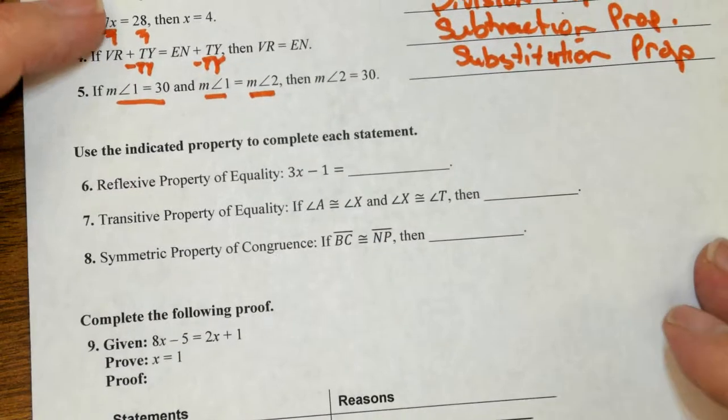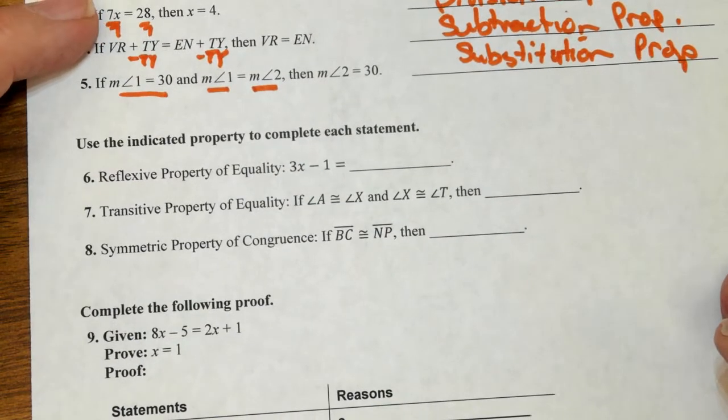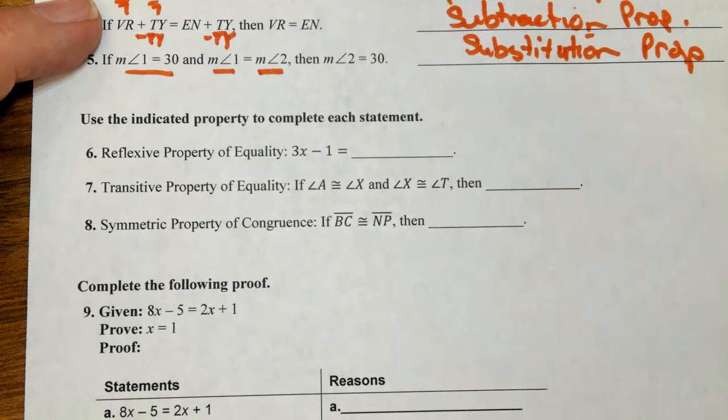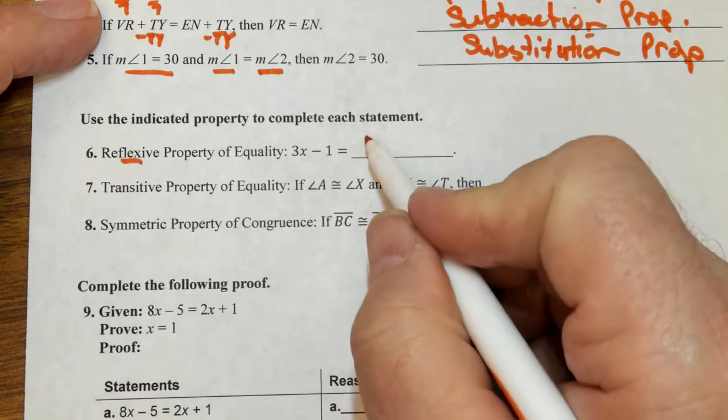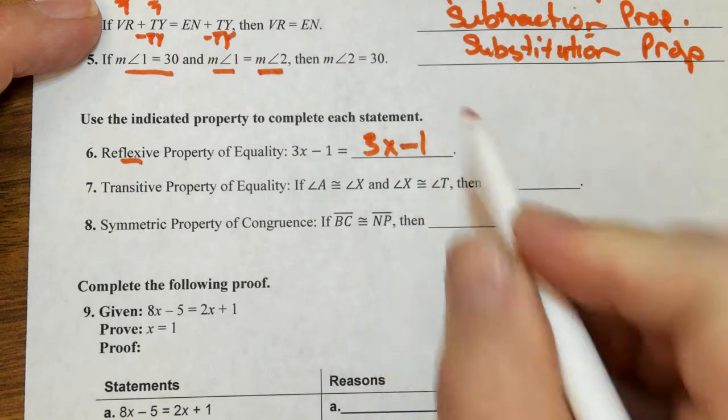Number six, reflexive property. Remember reflexive comes from think of reflection in your mirror. It looks exactly the same. So this is going to look exactly the same.